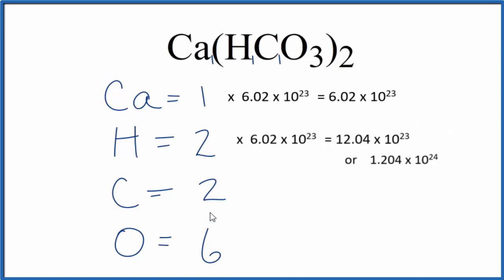For the carbon, we have two carbon atoms. We multiply that 2 times Avogadro's number. That gives us the number of carbon atoms in this Ca(HCO₃)₂.